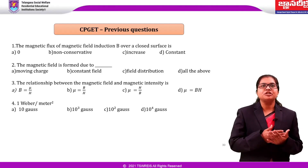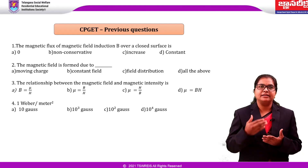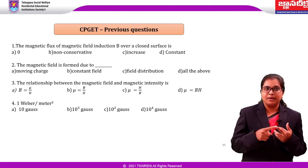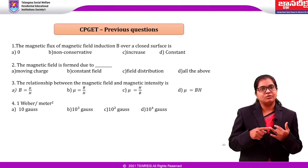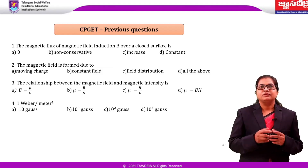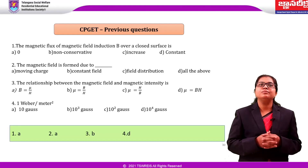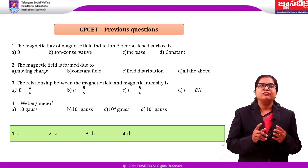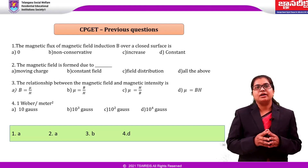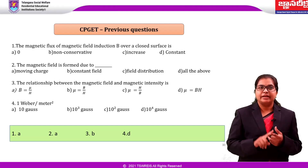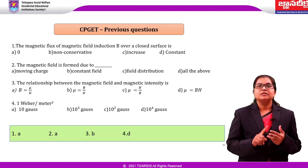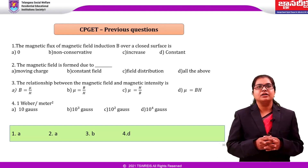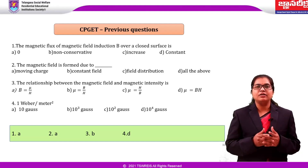Third question: The relation between the magnetic field and magnetic flux density is? Options: B equals μH, μ equals B/H, μ equals H/B, μ equals pH. Answer is μ equals B/H, because B equals μH, so μ is the permeability. Fourth question: One Weber per meter square is equal to? Options: 10 Gauss, 10³ Gauss, 10² Gauss, or 10⁴ Gauss. Answer is 10⁴ Gauss — that is equal to one Weber per meter square or one Tesla.